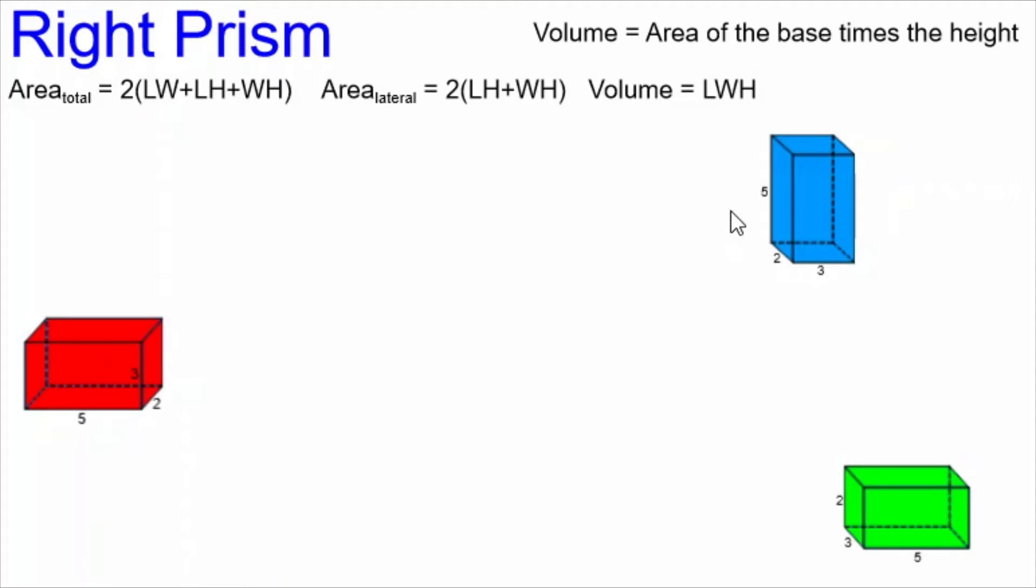Here I'm showing the same right prism, but with three different bases. The blue one has the smallest face as the base. The red one has the medium-sized face as the base. And the green one has the largest face as the base.